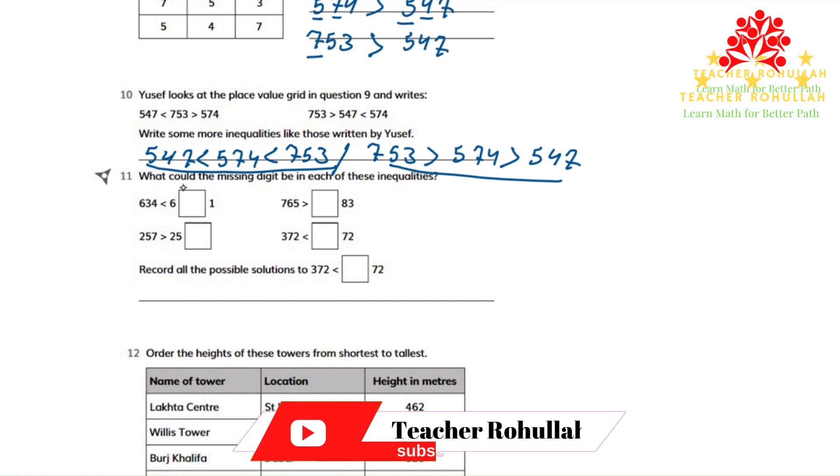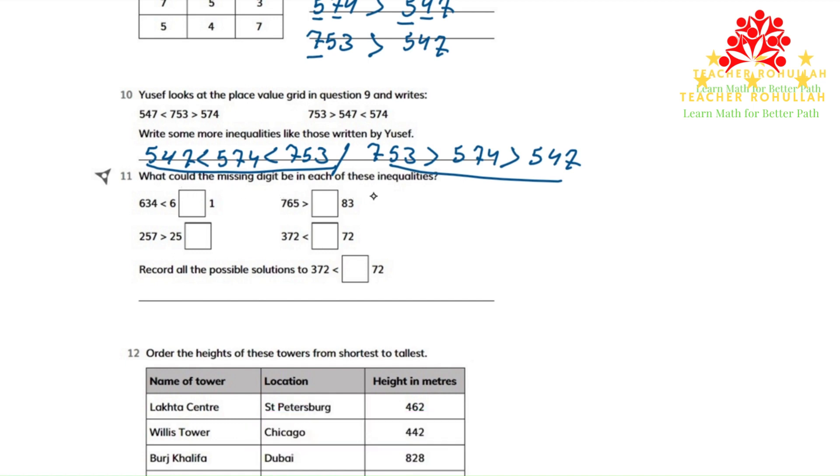In question number 11, it says what could the missing digit be in each of these inequalities? So in each inequality, there is a missing number, maybe in the hundreds place, maybe in the ones place, or maybe in the tens place. We have to find the number so that the inequality be correct.